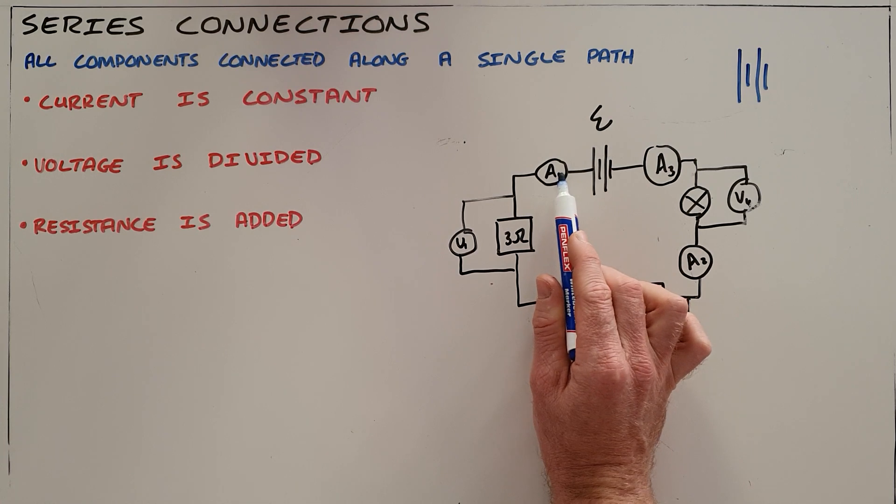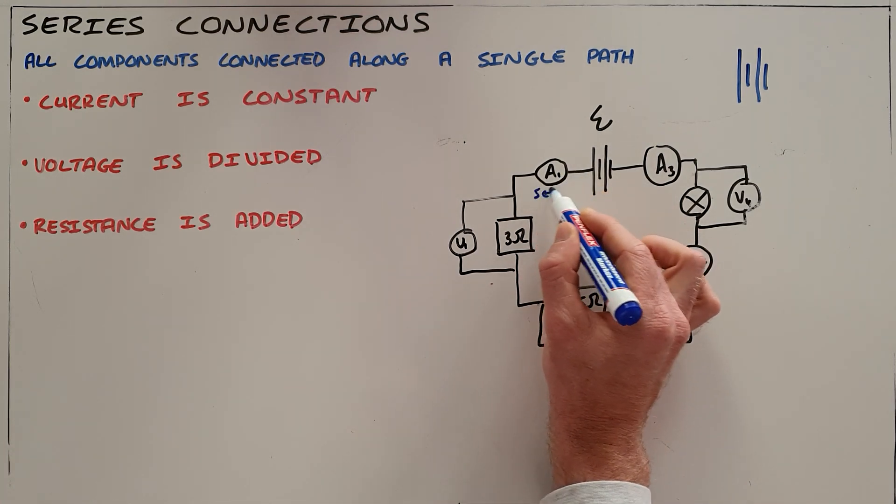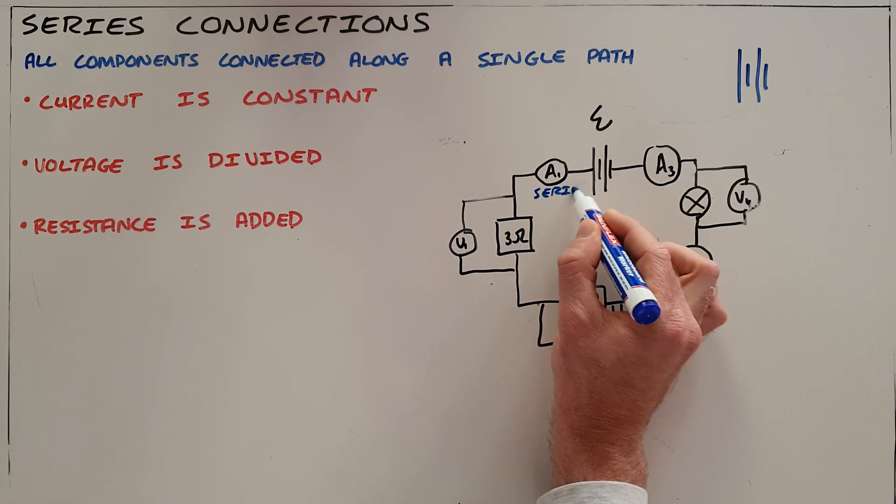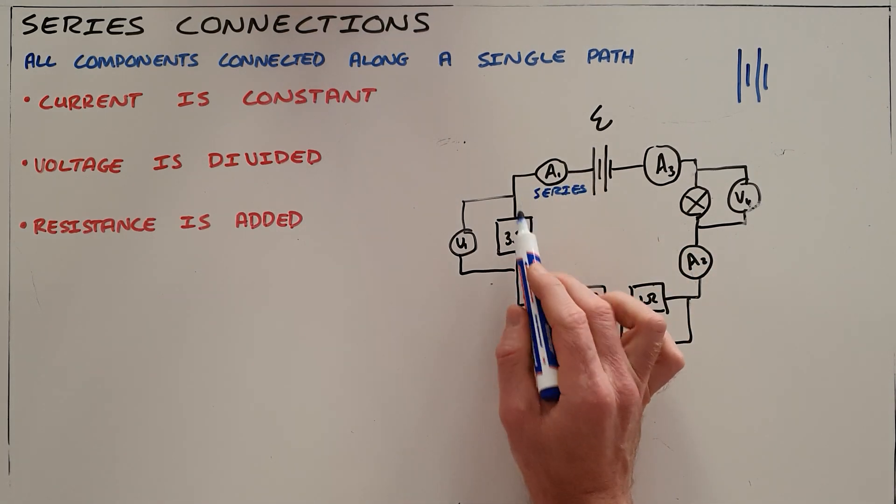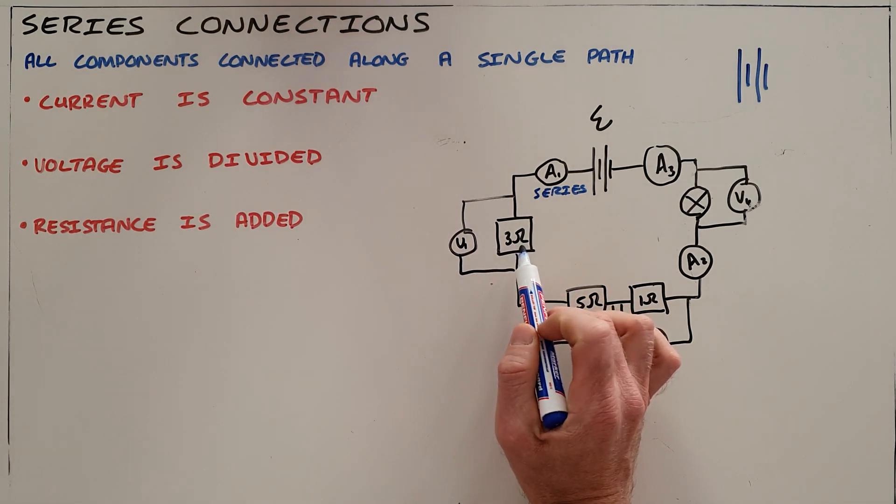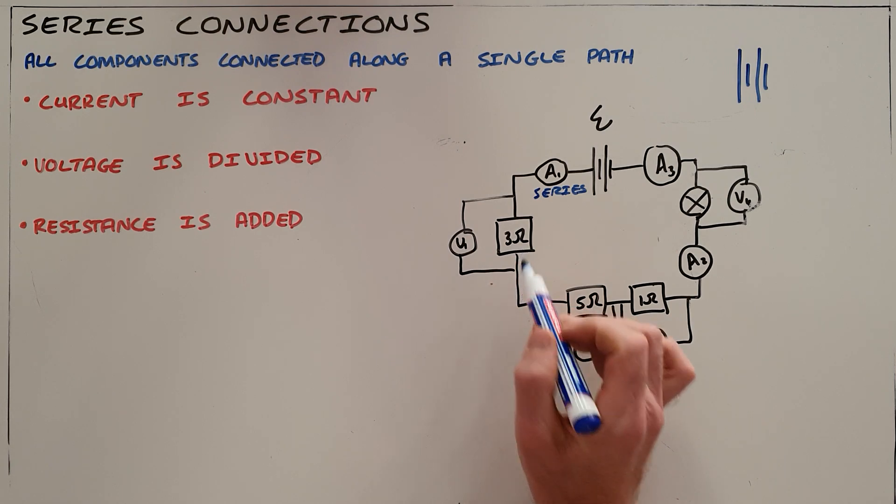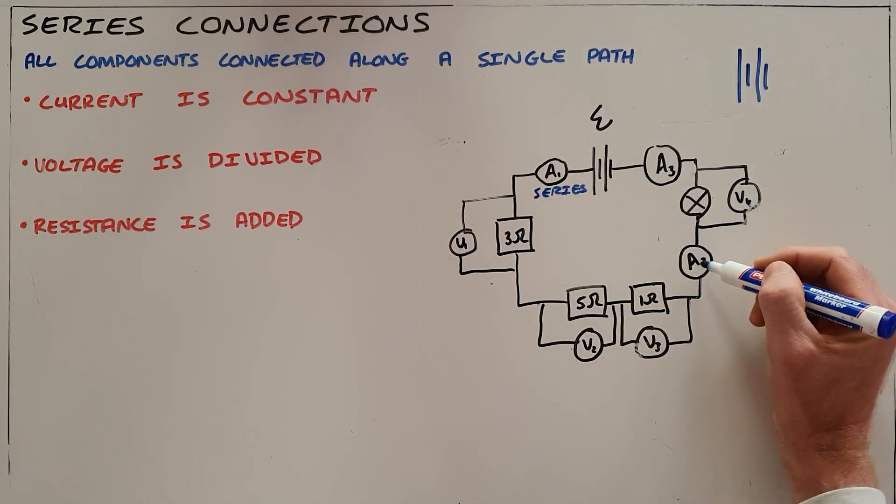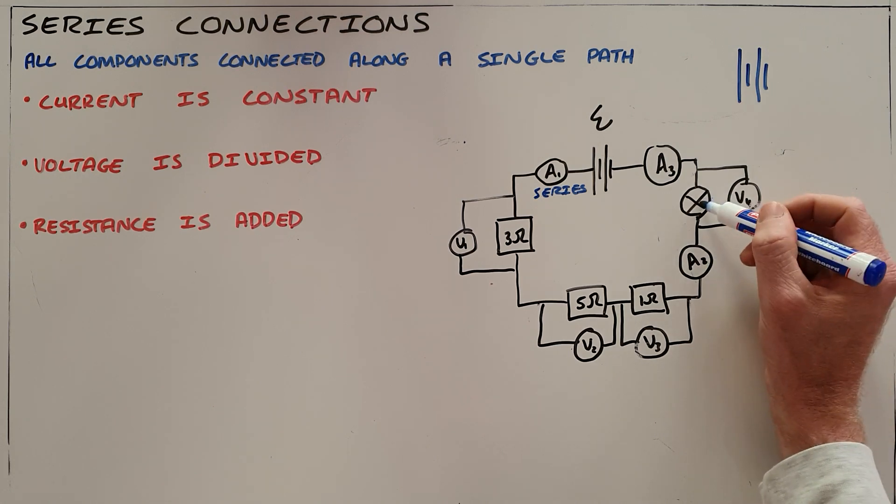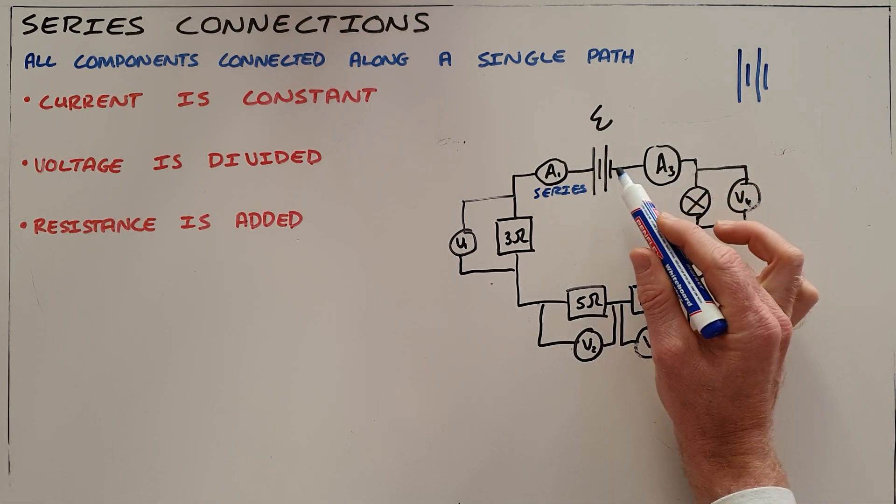It is forced to first pass through ammeter A1. We know that ammeters must always be connected in series so that they can measure the current. It then follows the path along through resistor 1 which is the 3 ohm resistor, followed by the 5 ohm resistor, followed by the 1 ohm resistor, followed by ammeter A2, followed by the light bulb, and then ammeter A3 back into the battery.